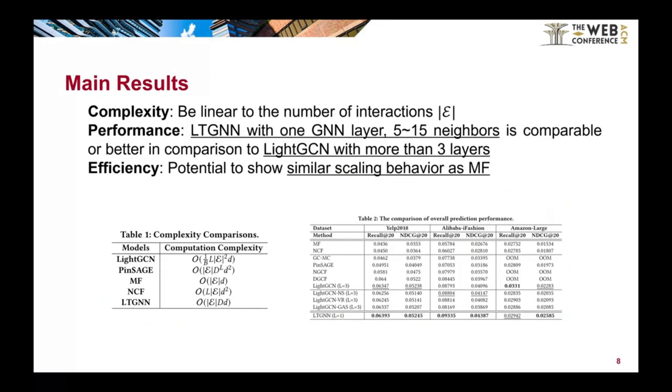Here are the main results of our paper. We present a complexity analysis which shows that our linear time graph neural network has a linear complexity with respect to the number of interactions, which is much better than existing GNNs and comparable to MF and DNN methods.